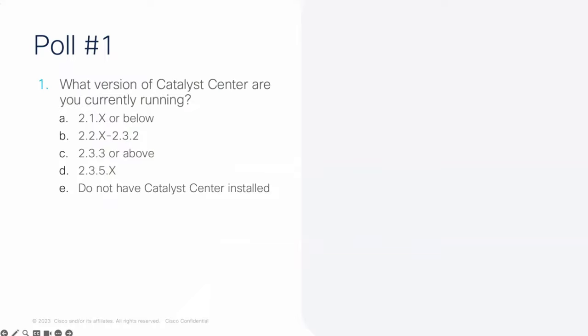We'd like to know a little bit about the environment you are running in — the Catalyst Center version you are currently running on your network: 2.1x or below, 2.2, 2.3.2, 2.3 or above, 2.3.5, or if you don't have any Catalyst Center installed yet. We will see the Slido poll coming up for you, and if you can respond, it will be really helpful for us to know how your deployment is going.